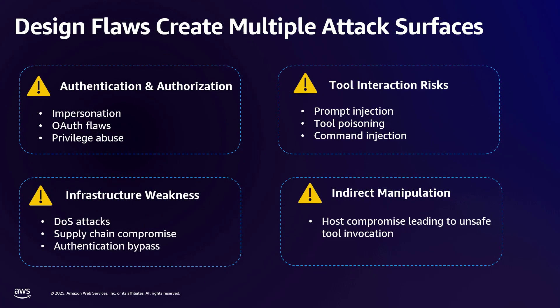Design flaws create multiple attack surfaces. As a security expert, these are very common — we've seen them since the first days of the internet, from the 80s and 90s to today. Authentication and authorization issues, impersonation, OAuth flows, privilege abuse, tool interaction risks — whether running SOA, APIs, going back to three-tier architectures and into Gen.AI today, it's the same thing. You have prompt injections, tool poisoning, command injection, infrastructure weaknesses — DOS attacks, supply chain compromises, authentication bypass. Those are all real attack surface issues with MCP, along with indirect manipulation through host compromise leading to unsafe tool invocation.